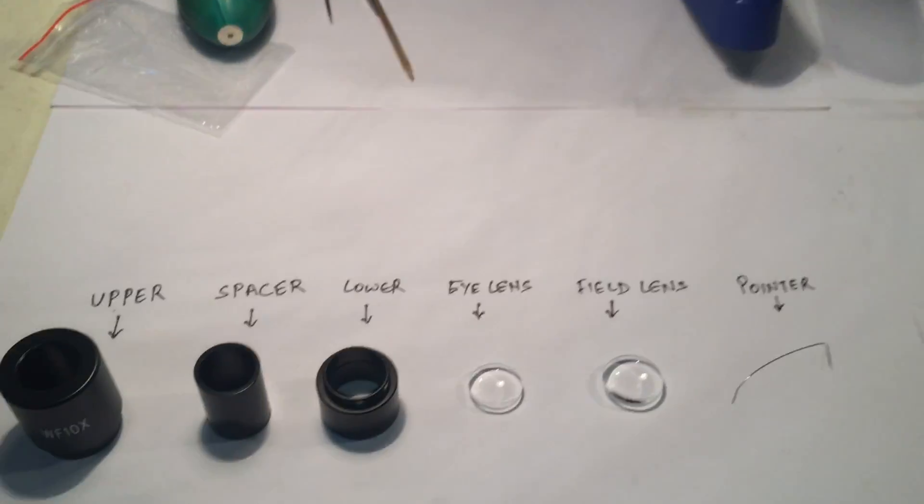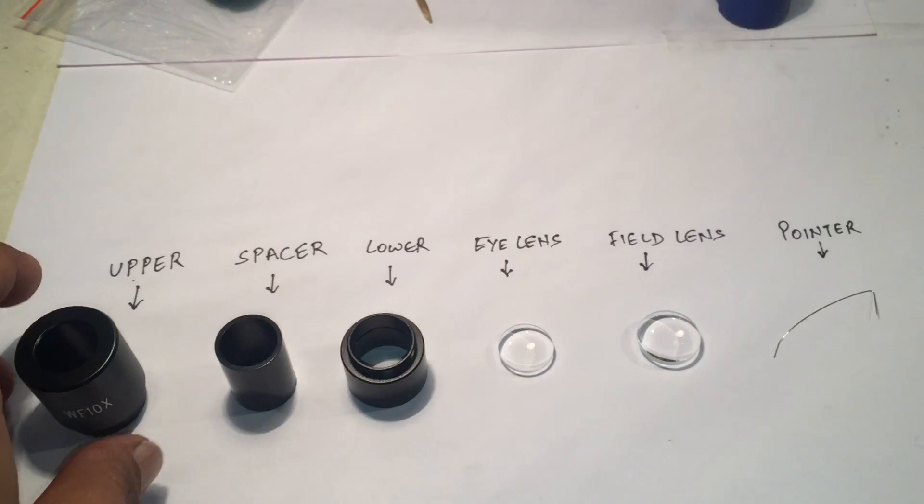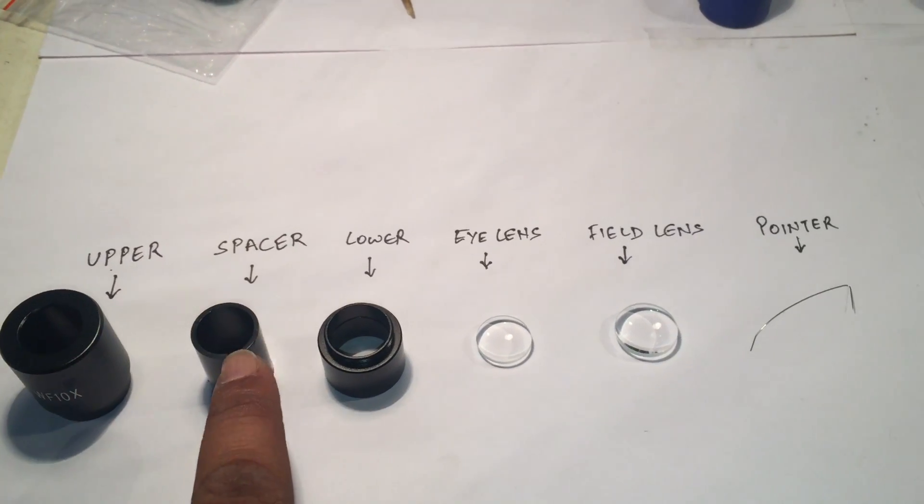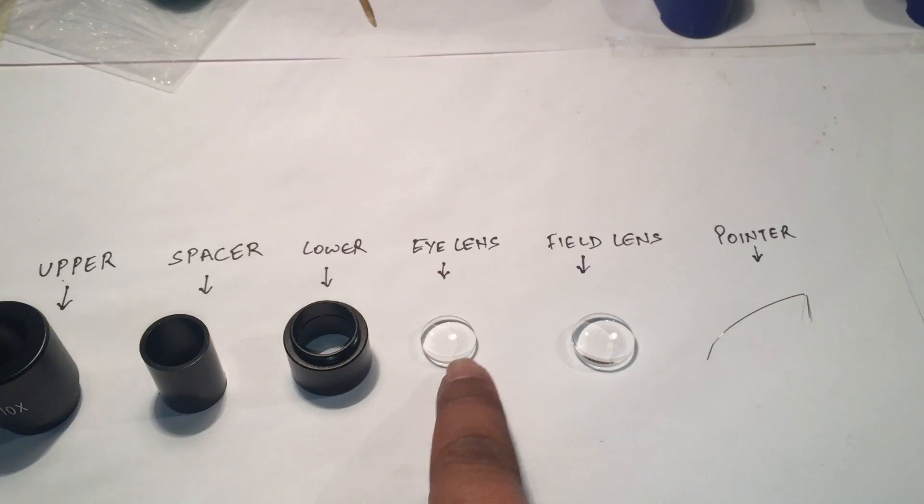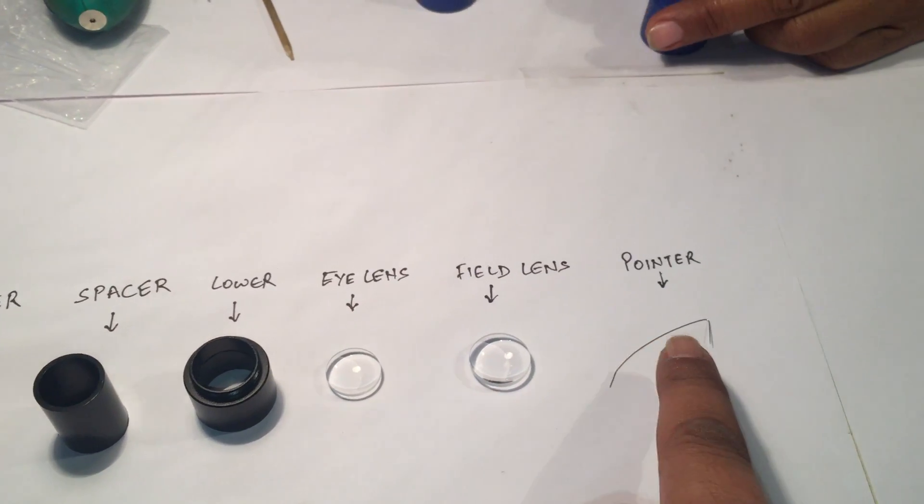Folks, I am telling you again the parts of the 10X. This is the upper part, the spacer, the lower. The small lens is called the eye lens. The bigger lens is the field lens. And this is the pointer.